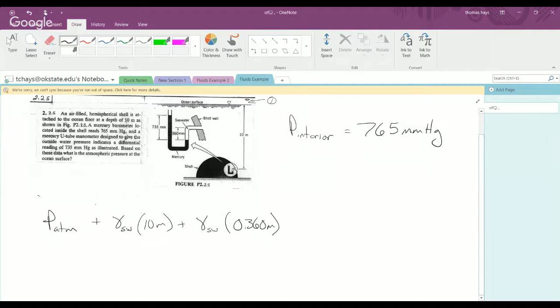And in all these cases, we've been adding pressure because we're increasing in depth. And now with the mercury manometer attached to the wall, we will be subtracting pressure, because the mercury column is actually going up. So gamma mercury times 0.735 meters. So now we're at the top of that mercury manometer right there. And that will equal pressure interior.